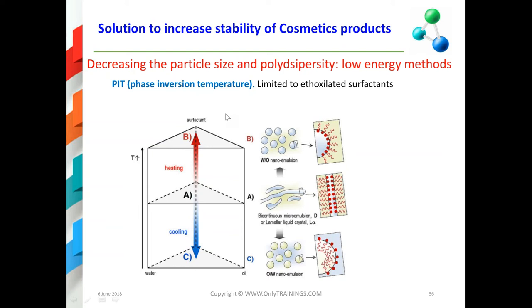One of these low-energy methods is the PIT — the phase inversion temperature — which is limited to ethoxylated surfactants. In this method, you will heat or cool the system, starting from a coarse emulsion. Heating the system, you will dehydrate the ethoxylate head of the surfactants and form phases such as microemulsions that have very low interfacial tension. Then by decreasing the temperature again and taking advantage of this ultra-low interfacial tension, you will form a very small droplet-sized emulsion — a nano emulsion — with low polydispersity. So you form this kind of emulsion only by heating and cooling the system.